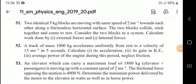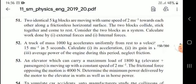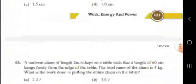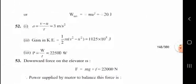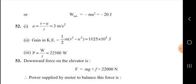Numerical: A truck of mass 1000 kg accelerates uniformly from rest to 15 m/s in 5 seconds. Acceleration a = (v−u)/t = 3 m/s². Gain in kinetic energy = ½mv² − ½mu² = 1.125 × 10⁵ joules. Average power = W/t = 22,500 watts.